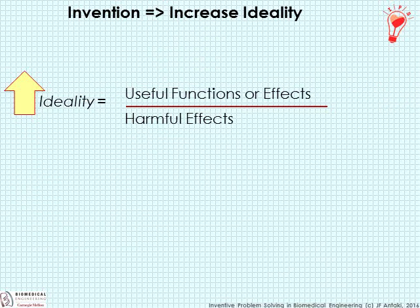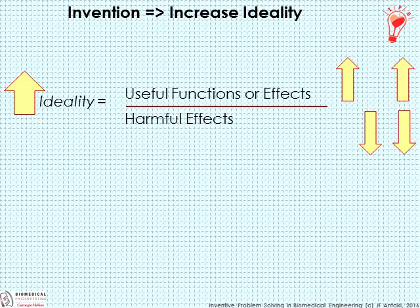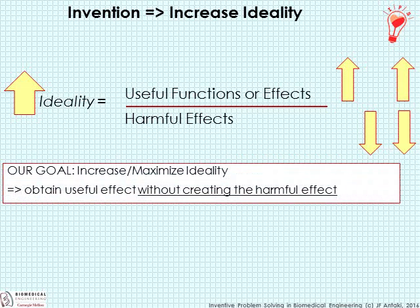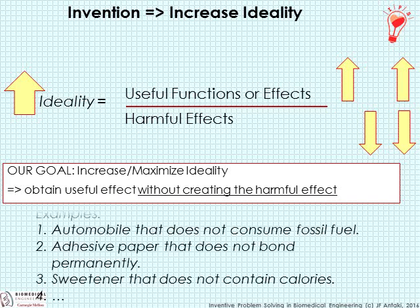Having defined Ideality, we can now define invention as anything that improves Ideality — either improving the useful functions or effects, reducing the harmful effects, or doing both. Our objective as inventors or engineers is always to maximize Ideality — ideally, to obtain the useful effect without even creating a harmful effect. That's the ultimate invention: an automobile that doesn't consume fossil fuel, an adhesive that does not bond permanently, a sweetener that does not contain calories.